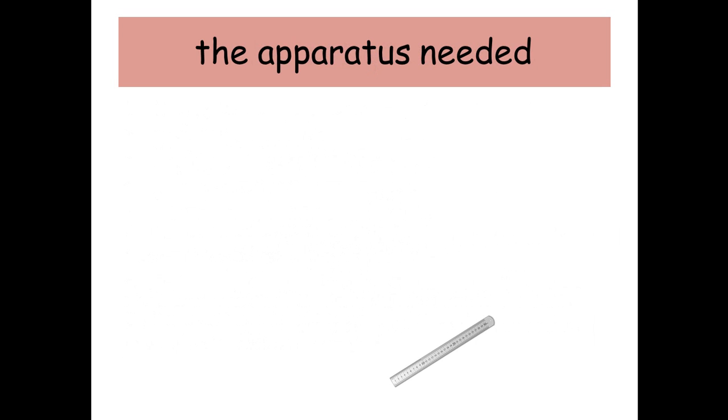So the apparatus that you need, well, you could be asked for anything really. So you just need to think about what you're going to have available to you in this laboratory. You could have like a ruler or vernier calipers, a protractor.